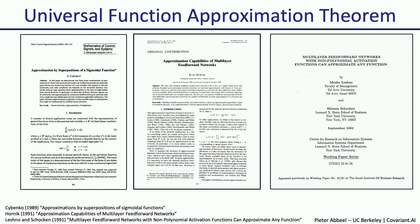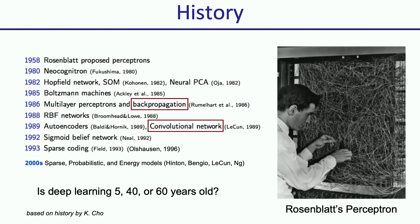Looking at some history: people were building neural networks already in the 1950s. The backpropagation algorithm that trains neural networks was invented in the 80s and is still in use today. The convolutional network architecture for computer vision was also invented in the late 80s. So you might wonder — is deep learning five years old, 40 years old, or 60 years old? It's hard to say. Obviously it's 60 years old, but why is all of this happening now and not in the 50s?